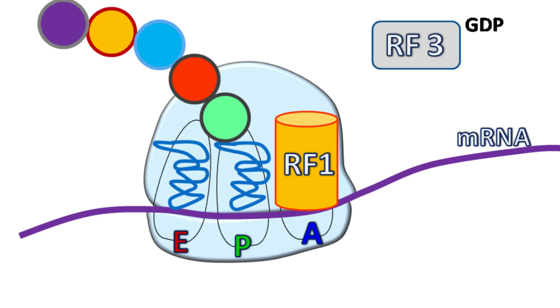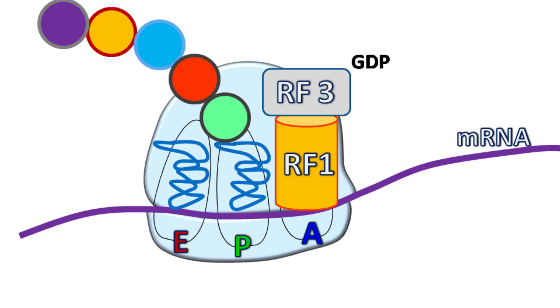This release is triggered when GDP-bound RF3 gets associated with RF1.